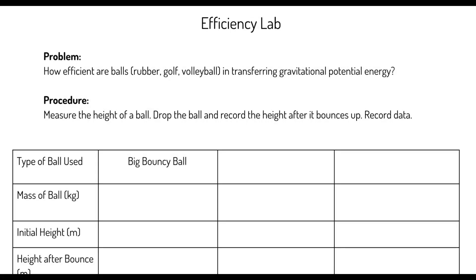Hey Science Tens, what's going on? It's Mr. Walton here. Today we're going to be doing an efficiency lab. In this lab, we're dropping some balls from a height of one meter, seeing how high they bounce back up, calculating how much potential energy they had at the beginning and after the bounce, and comparing them to calculate the efficiency — how much energy was preserved and useful at the end of the bounce.